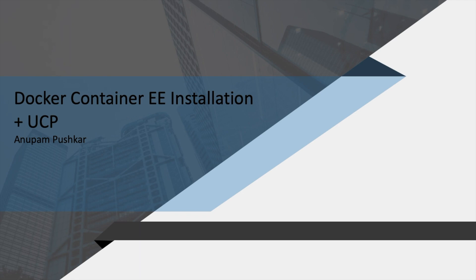Hello everyone, this is Anupam and welcome to vPower. This is the second video of the video series on containers. In this video we are going to install Docker Container Enterprise Edition as well as UCP. There is an existing video of a Docker Container Enterprise installation, so this will be quite quick, and we are also covering UCP. We will be going across an overview of UCP, and there will be an upcoming video for an in-depth review post configuration. In this video we are going to install and configure a two-node UCP: one master and two worker nodes. So let's directly jump into the lab.